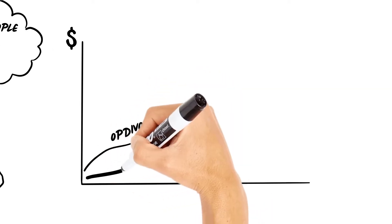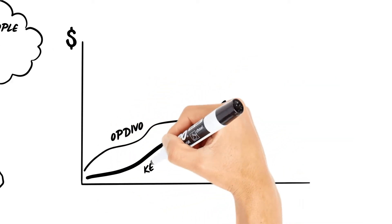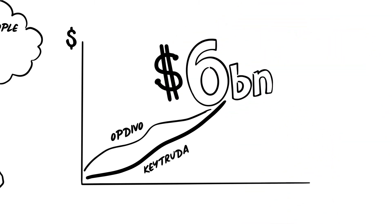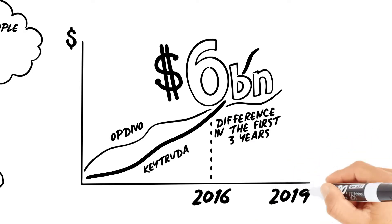Opdivo, despite being essentially the same as its closest rival Keytruda, gained an early advantage. Six billion dollars difference in the first three years, and even to the end of 2019 the two products have the same cumulative revenues.